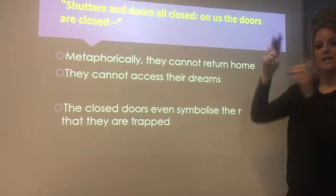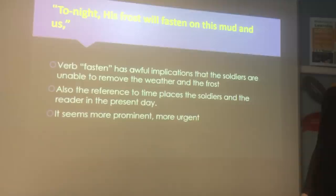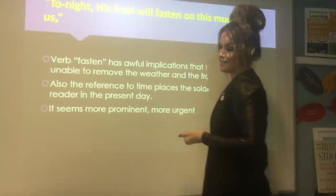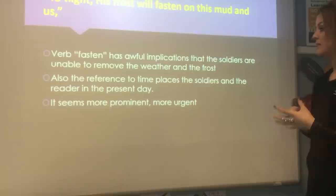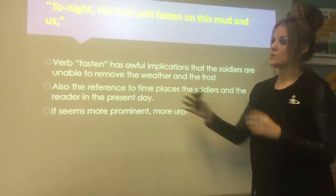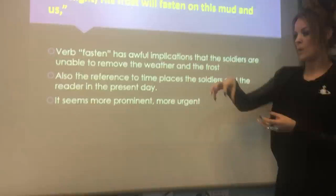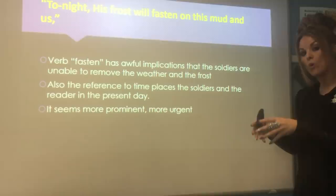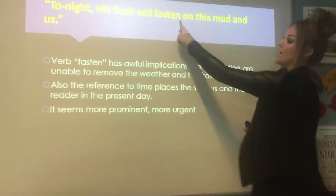'Tonight, his frost will fasten on this mud and us.' Please check your anthology because mine says 'his,' yours might say 'this.' This time, we want the verb 'fasten' — it has awful implications that the soldiers are unable to remove the weather; the frost is fastened. Look at that awful alliteration as well. Also, Owen moves to the present tense here, which makes it more poignant, more immediate — it's almost as if we become the soldier in this moment. It's more urgent, as if they've got to escape. But this is telling us they can't, because they're going to be fastened to the mud: stuck and unable to get out.